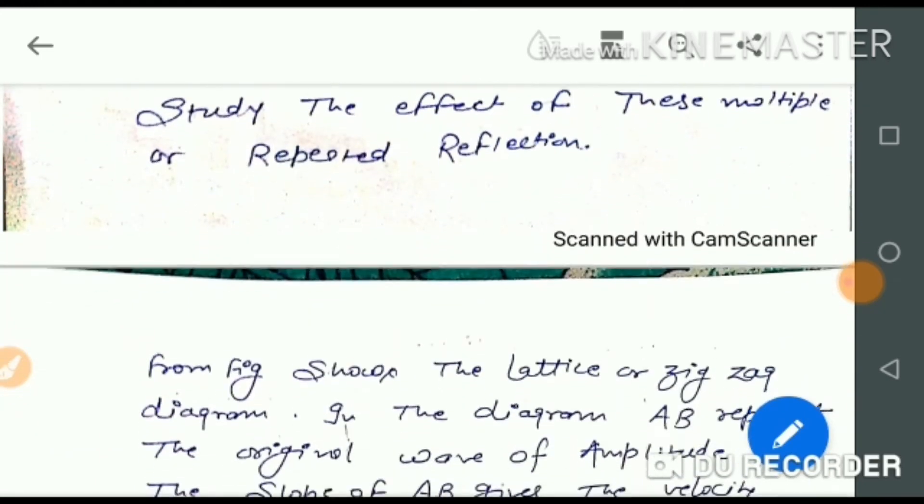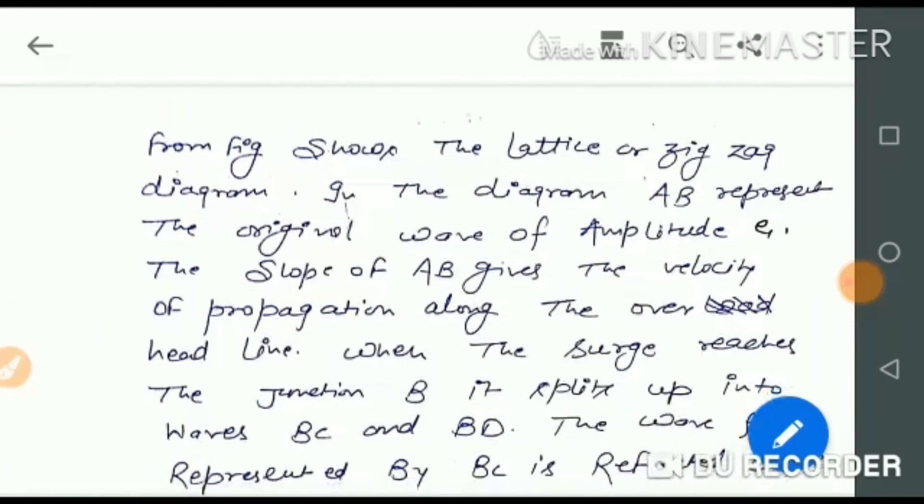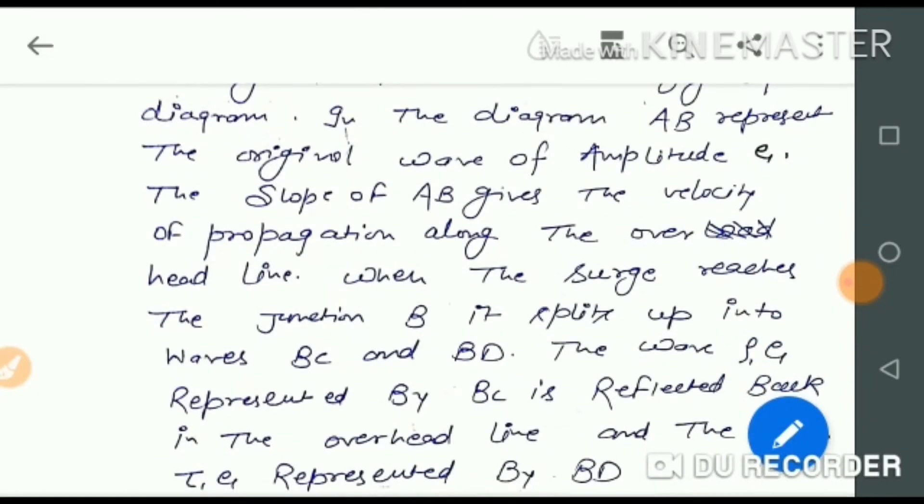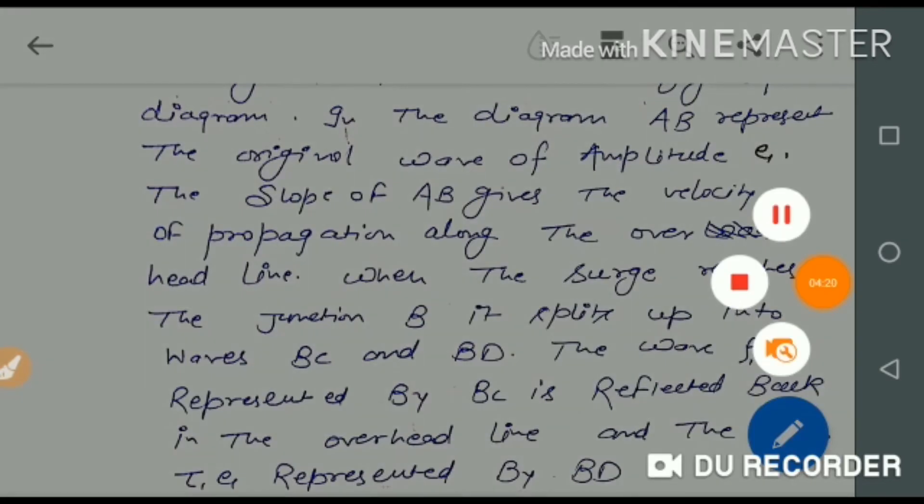The effect of multiple repeated reflections is shown in the lattice zigzag diagram. In the diagram, AB represents the original wave of amplitude E. The slope of AB gives the velocity of propagation along the overhead line.